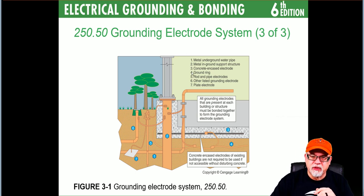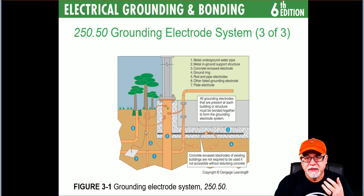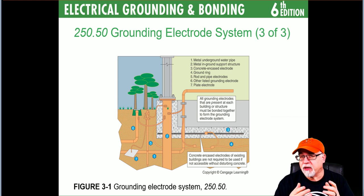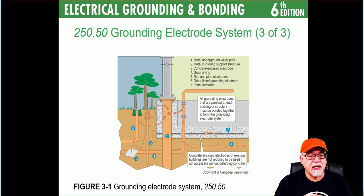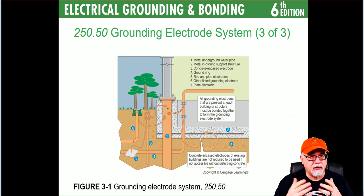Number five is probably the most common — the ground rod or pipe type electrode, driven eight feet in contact with the earth. If you hit rock, you can do it at a 45-degree angle. If you hit rock again, you can dig a trench and put it in that way. We cover that in the program in depth.